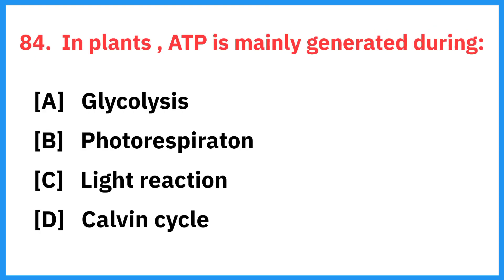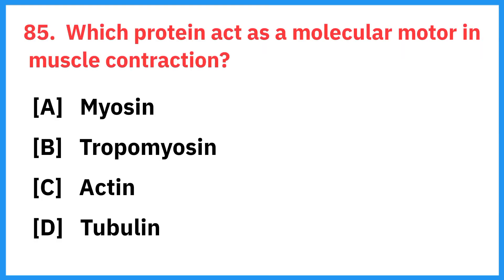In plants, ATP is mainly generated during — right answer is the light reaction. Which protein acts as a molecular motor in muscle contraction? Right answer is myosin.